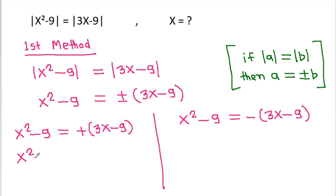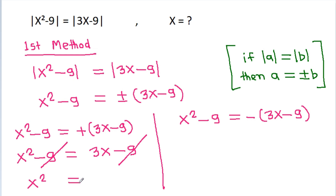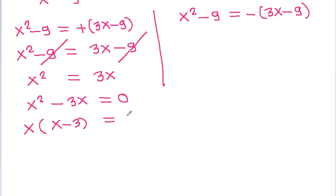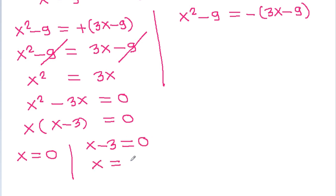For the first case, x² - 9 = 3x - 9, the -9 cancels, so x² - 3x = 0, and it is x(x - 3) = 0. So either x = 0 or x - 3 = 0, giving x = 3.